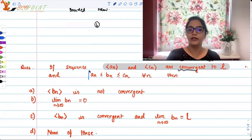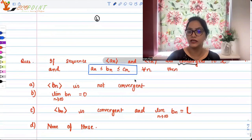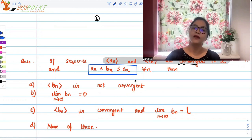And you also know that there is some sequence BN, which is always in between AN and CN. So for all N, for all entries, like A1 is smaller than B1, which is smaller than C1. Similarly, B2 is between A2 and C2, so on and so forth. Then BN is not convergent. Then BN, the limit of BN is 0 as N goes to infinity, which means that BN is convergent to 0. C is BN is convergent and the limit as N goes to infinity of BN is L. That is, it's convergent to L or none of these.